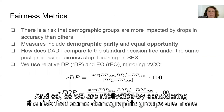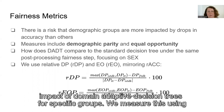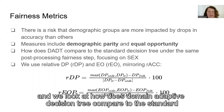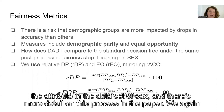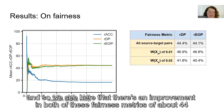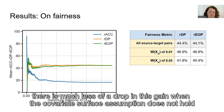As we are motivated by the risk that demographic groups are more impacted by drops in accuracy than others when domain shift occurs, we examine the impact of domain adaptive decision trees for specific groups. We measure this using two common AI fairness measures: demographic parity and equal opportunity. We look at how domain adaptive decision trees compare to the standard decision tree under the same post-processing fairness step, focusing on the attribute of sex. We see an improvement in both fairness metrics of about 44% over all source and target pairs, and much less of a drop in this gain when the covariate shift assumption does not hold.